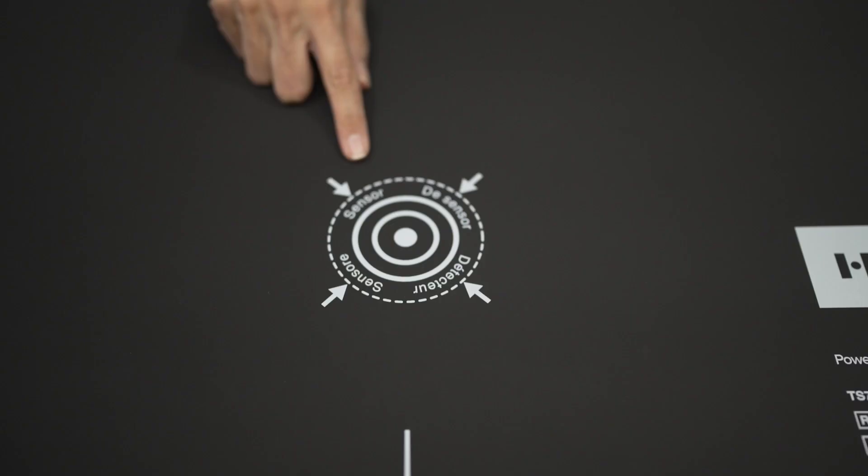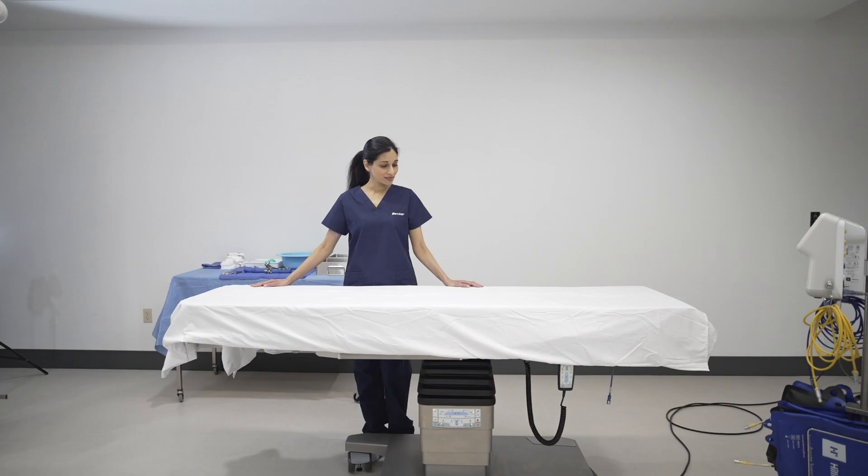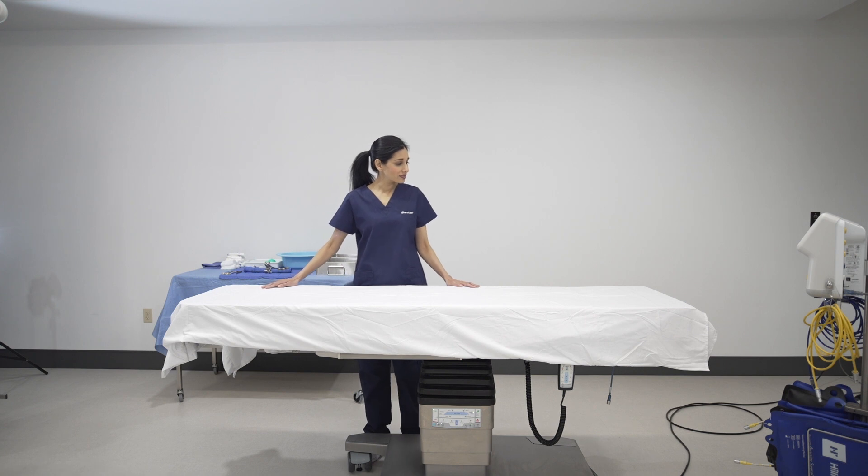Both the pads and blankets have a primary temperature sensor indicated on the surface. This sensor provides a feedback loop to the controller on the temperature of the warming surface. Only a thin sheet should be used between the pad or blanket and the patient for best warming results. Gel pad placement between warming pads and the patient is not recommended.